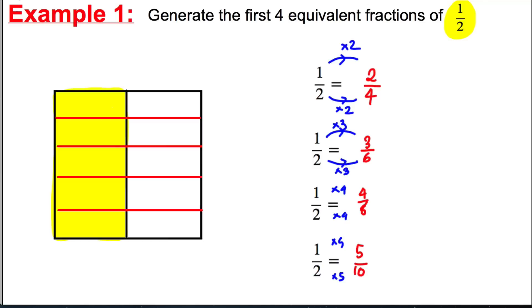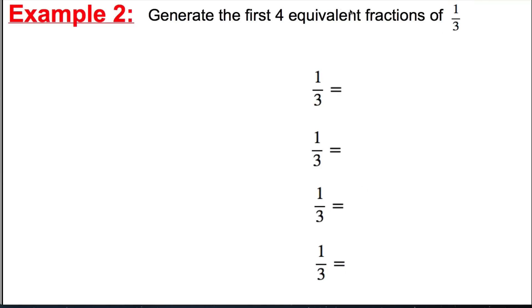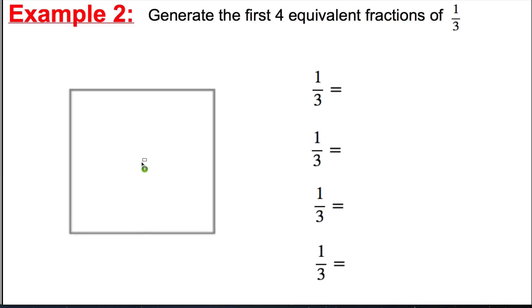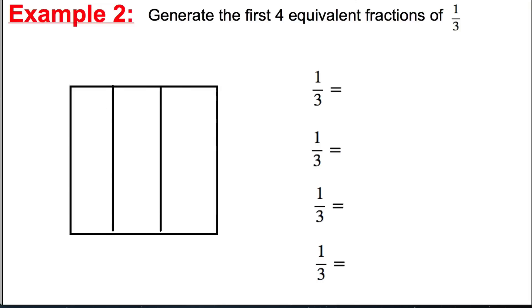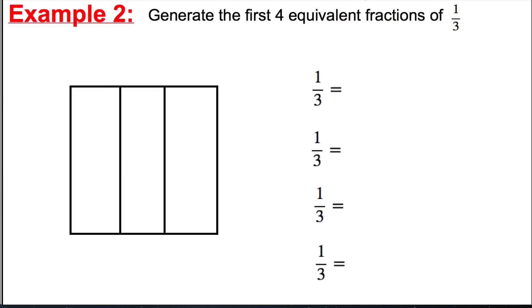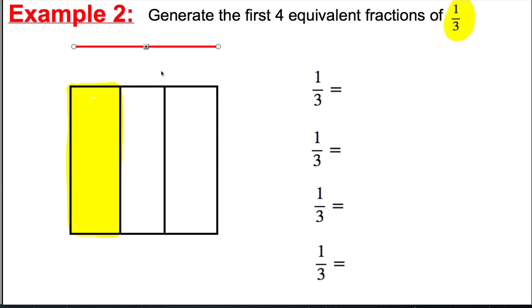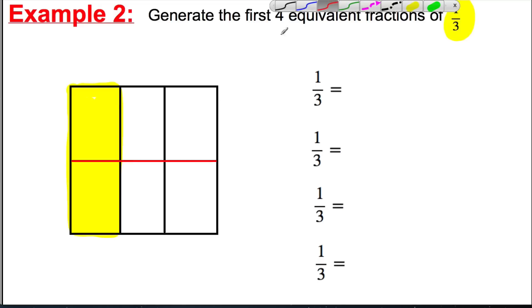Okay, let's have a go at another example. Example two: the first four equivalent fractions of a third. First thing — draw a nice neat square in your book, and we're going to divide it into thirds. Colour in one third to represent it. Now draw one line across, cutting it exactly in half horizontally. You can see that one third is the same as two out of six.